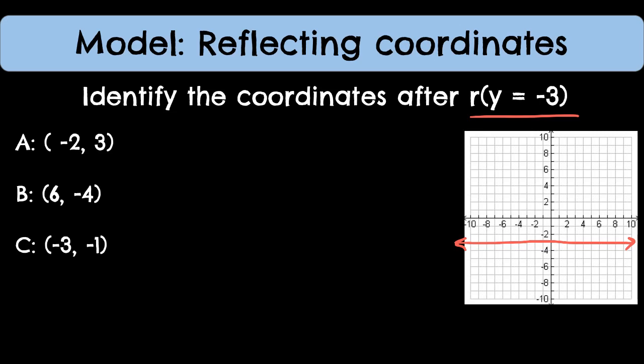Then I'm going to take these points: a, which is negative 2 comma 3; b, which is 6 comma negative 4; and c, negative 3 comma negative 1. I'm going to reflect them over the line.